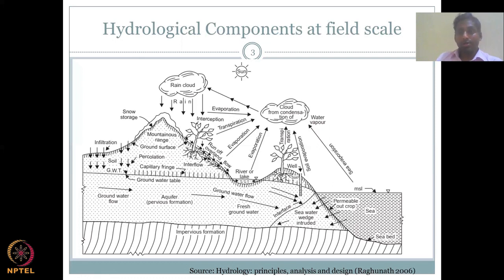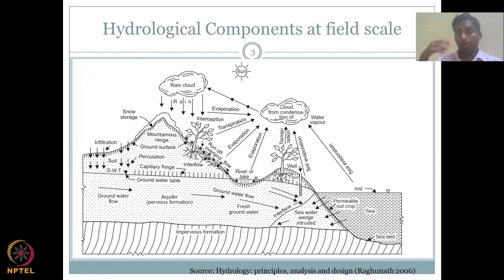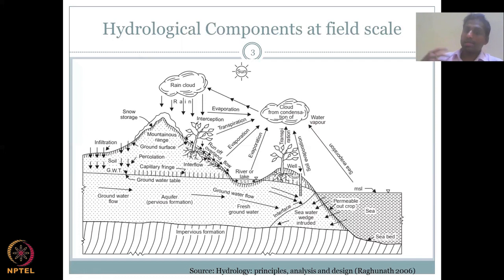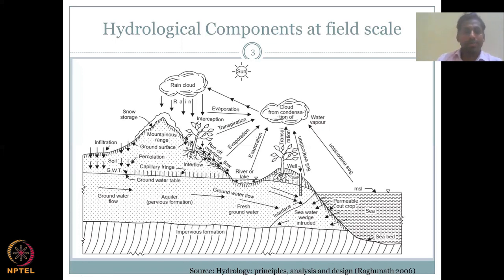The other component we saw is evapotranspiration. What happens to the remaining water? Of the parameters we saw, only precipitation is the input to the system — the arrow coming down. All the others are just relocation of water or a loss to the system, so water going out is a loss.